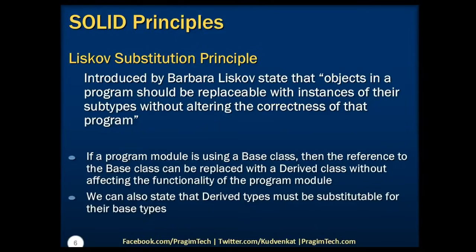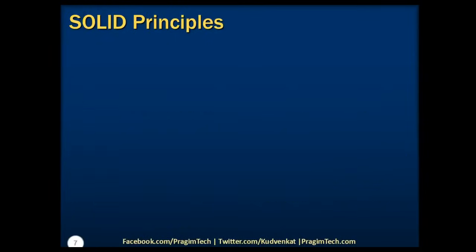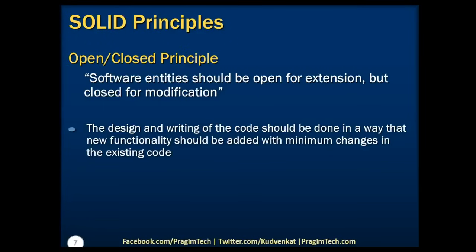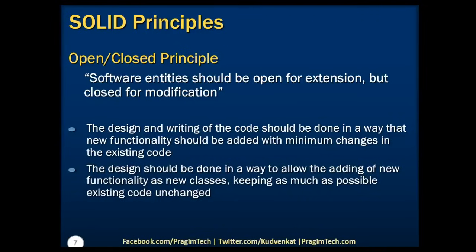The third principle is the Open-Close Principle. It states that software entities should be open for extension but closed for modification. The design and writing of the code should be done in such a way that new functionality can be added with a minimum set of changes in the existing code. That means a design should allow adding new functionality as new classes, keeping as much of the existing code unchanged as possible.